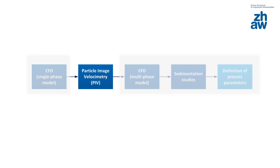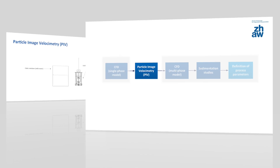These computer simulated data are experimentally verified by particle image velocimetry. Particle image velocimetry, or PIV, is a laser-assisted method which enables contactless measurement of fluid velocities in an optically accessible system. Let's start with a short overview of the theoretical principles of PIV measurement.